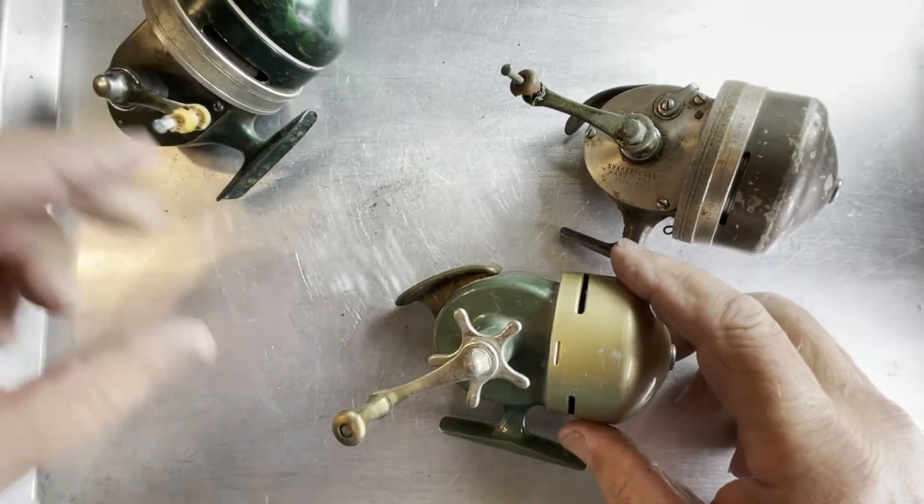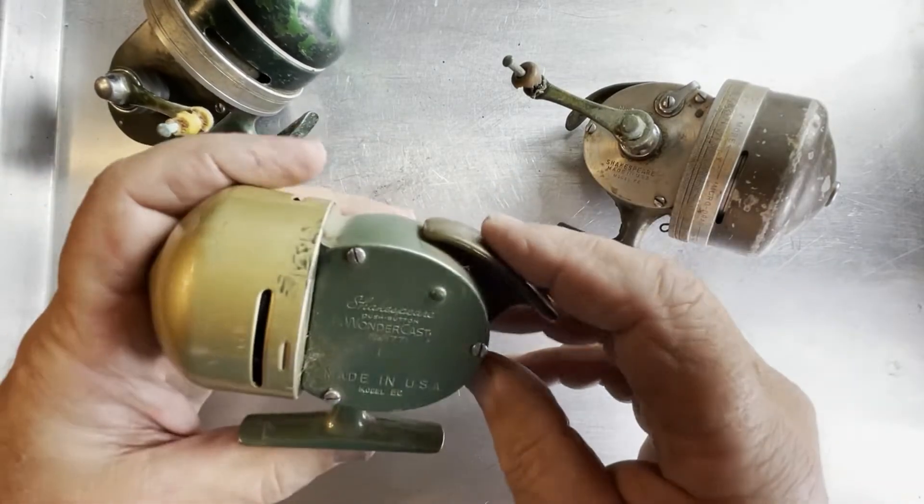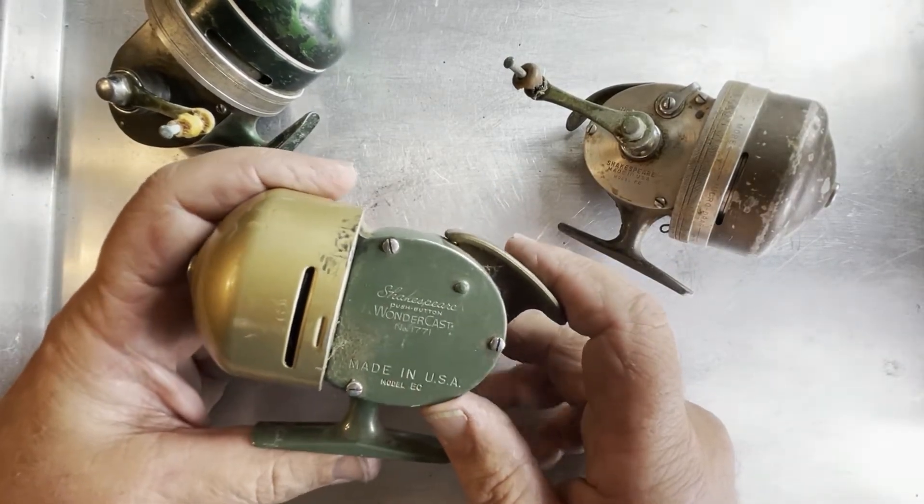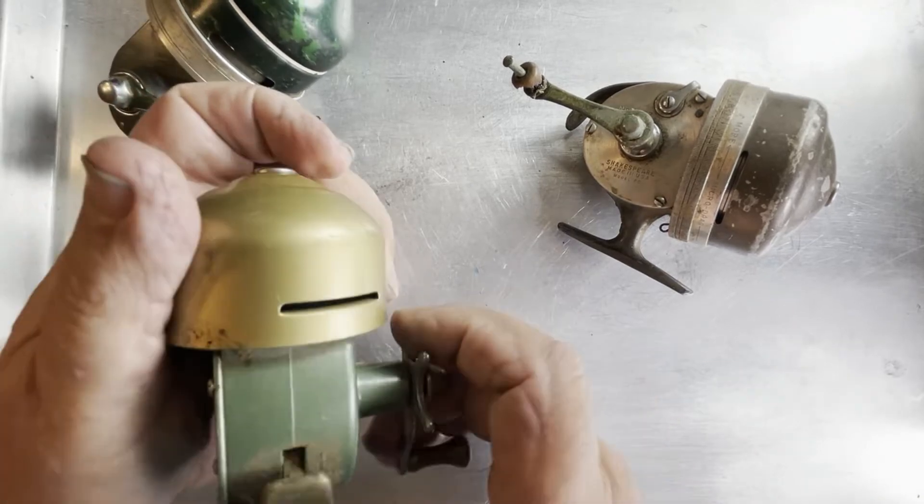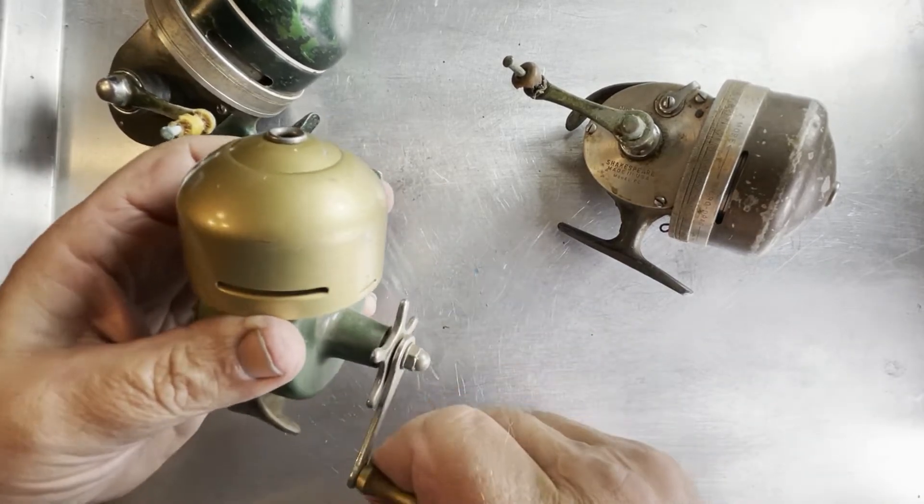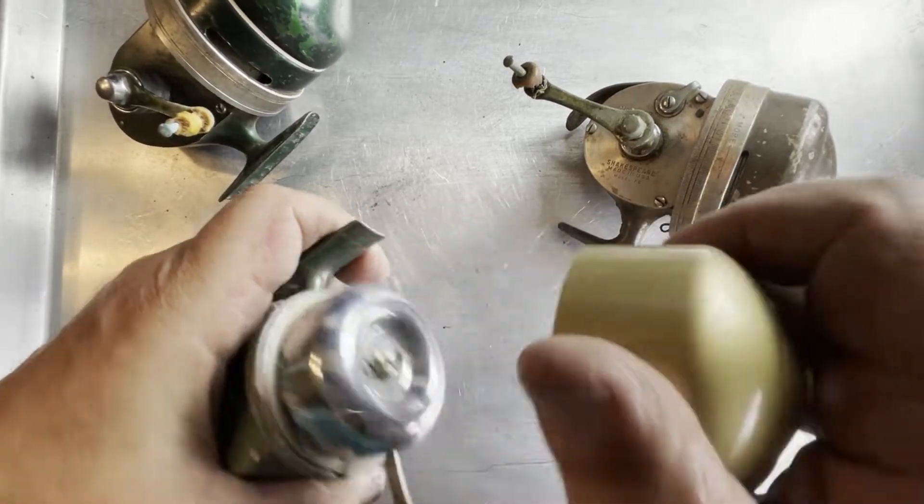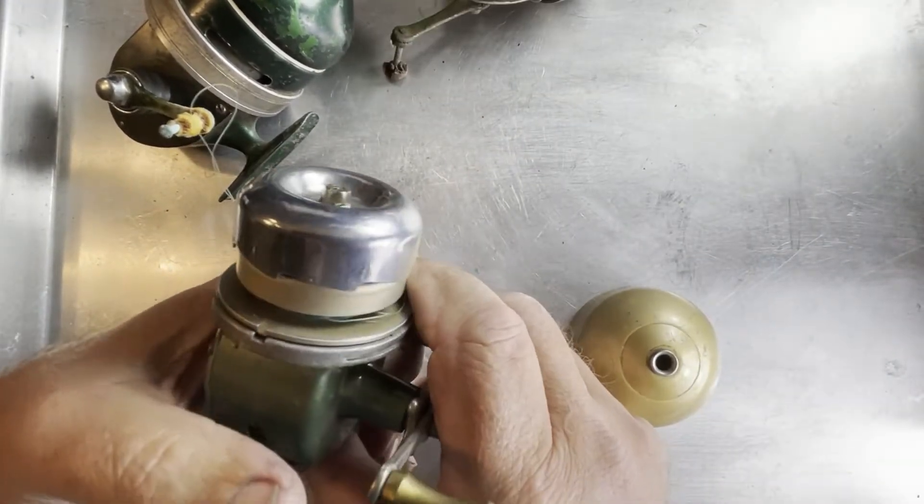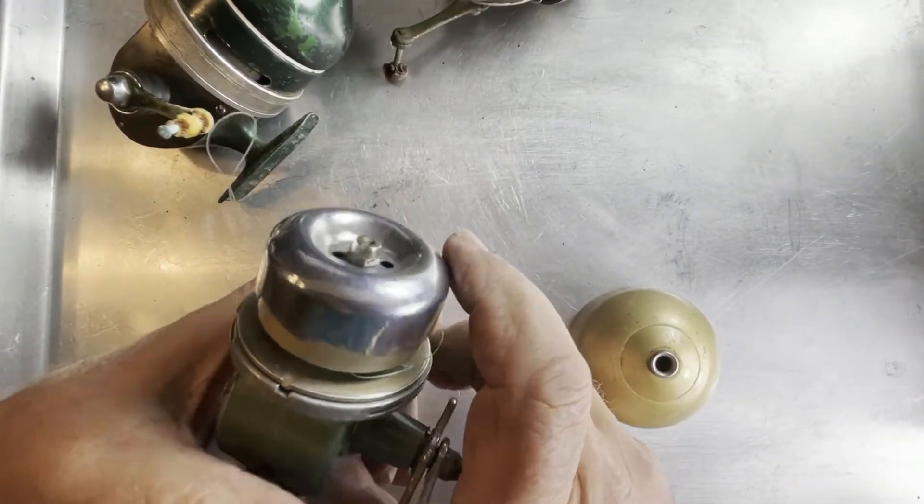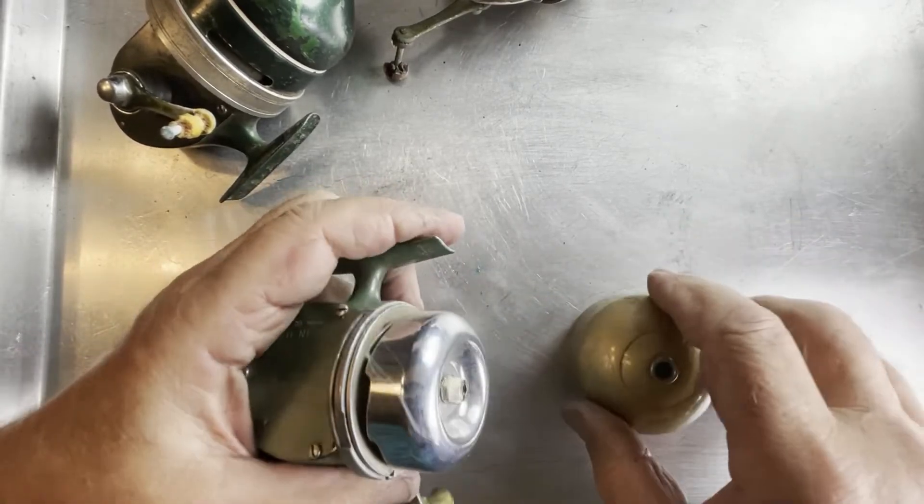There are all three Shakespeare reels. This one here is actually in very good shape. It's a Shakespeare Wondercast 1771. And it seems to be in reasonably decent shape. It's very tight. The button on it doesn't stay up. When you push it up, it drops right back down. So we'll have to take that apart and find out what's going on with that.